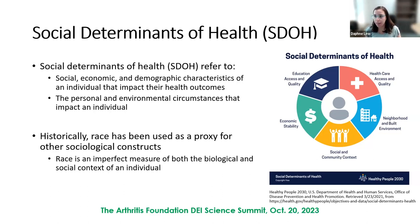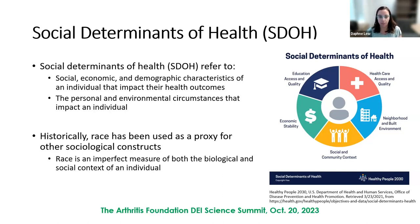There are a number of different domains that you can consider as social determinants of health, or SDOH. Some examples from the Healthy People 2030 initiative are shown here on the slide. The reason behind looking at SDOH is that typically race has been used as a proxy for sociological constructs that impact individuals, but race is an imperfect measure of both biological and social context.